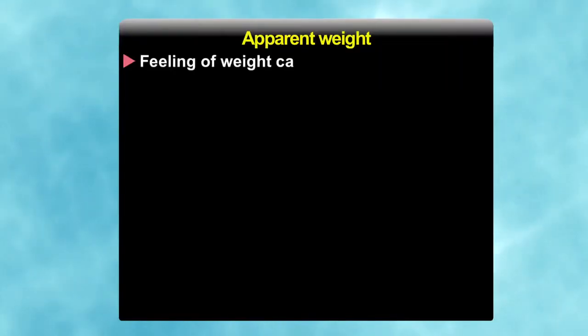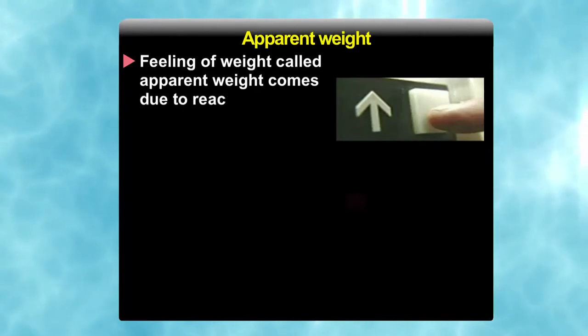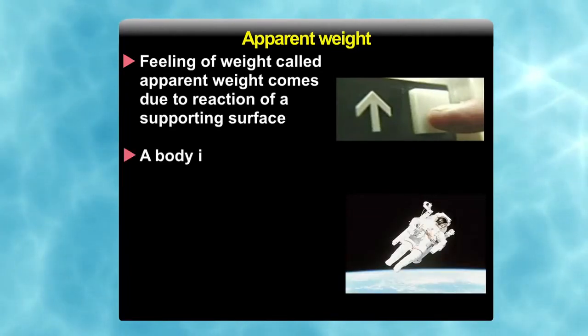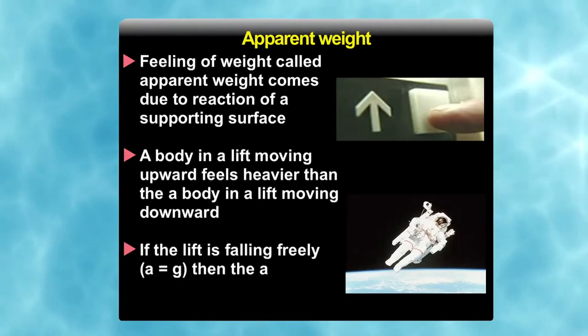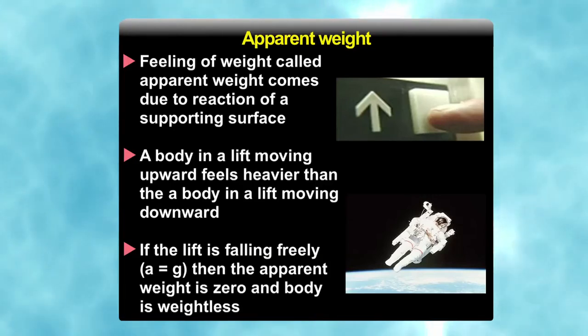Let us talk about the apparent weight. What exactly is apparent weight? Feeling of weight called apparent weight comes due to reaction of a supporting surface. A body in a lift moving upwards feels heavier than the body in a lift moving downward. If the lift is falling freely with A equal to g, then the apparent weight is 0 and body is weightless. Now let us discuss about the force exerted by the liquids, that is buoyancy.